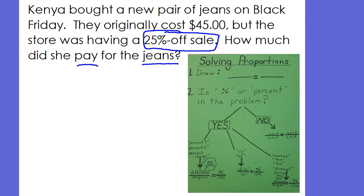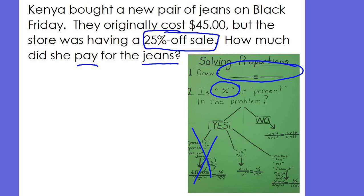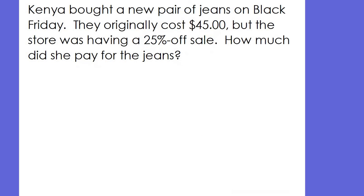First of all, let's look at our little worksheet here. We're going to draw this when we start to solve it. I see a percent sign right there, so I know I'm going down here to yes. I do not see the words percent increase, percent decrease, or percent change, so that's not it. I don't see 'is' and 'of', so that's not it. But I do see that she went to a sale, which is a discount, so this is definitely what we're going to be using when we go to the next page and solve this.